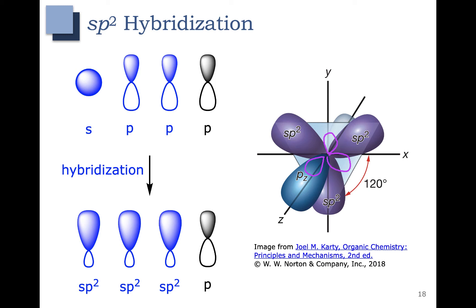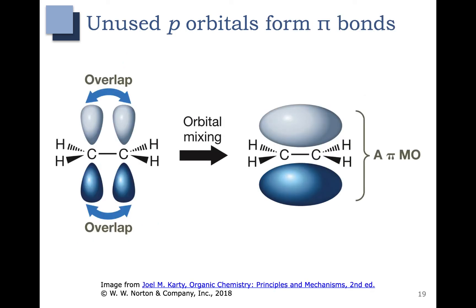Now the sp2 hybrid orbitals are going to form sigma bonds. What happens with that p orbital that wasn't hybridized?